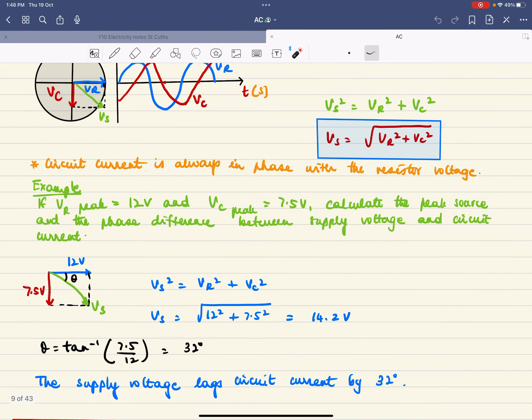If the peak voltage across the resistor is 12 volts and the peak voltage across the capacitor is 7.5 volts, we can calculate the peak source voltage and the phase difference between the supply voltage and the circuit current. That's your resistor voltage, here's the capacitor voltage—you complete the parallelogram.